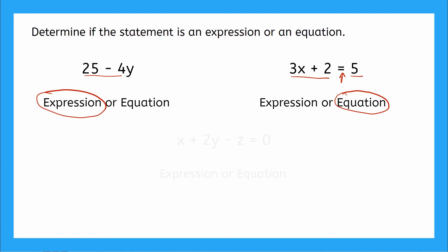And let's do one more. Last one says x plus 2y minus z equals 0. Expression or equation? This one's tricky, right? What does this 0 here mean? Is that an expression? You know what? 0 by itself is an expression. So that means this equal sign right here, that gives it away. This one is an equation.